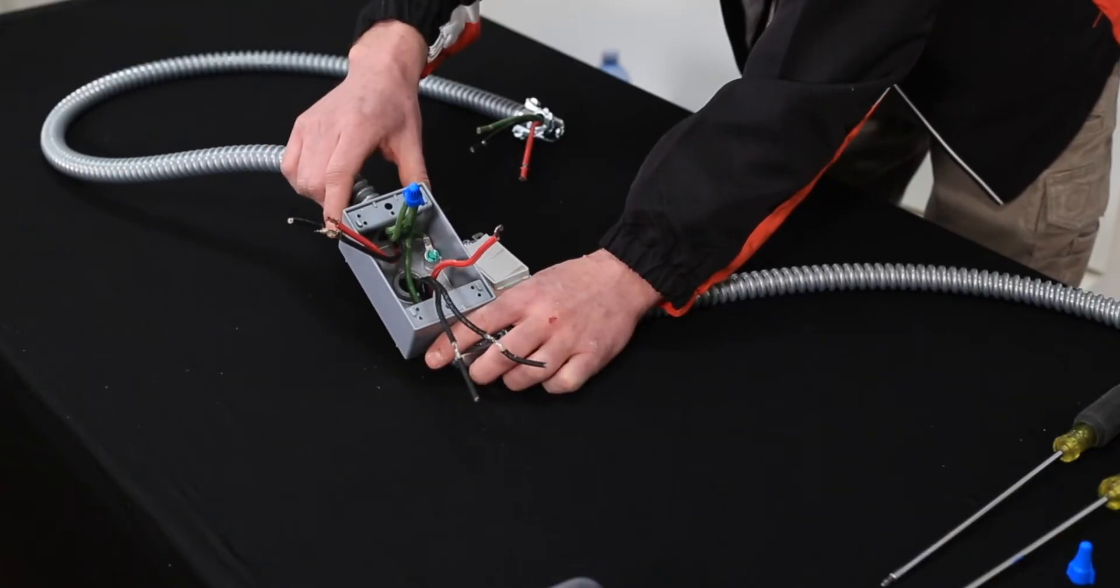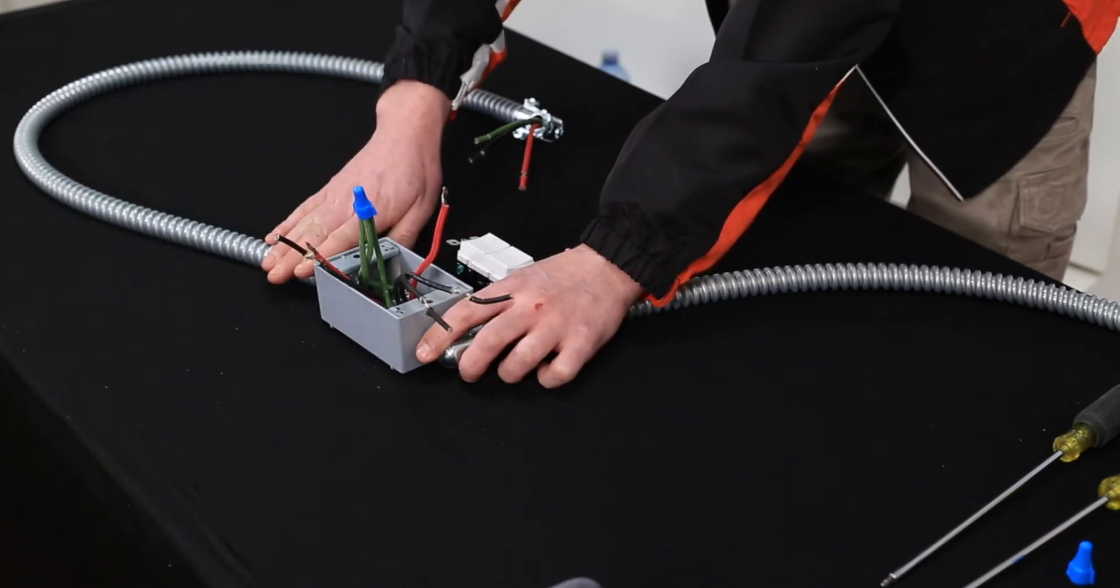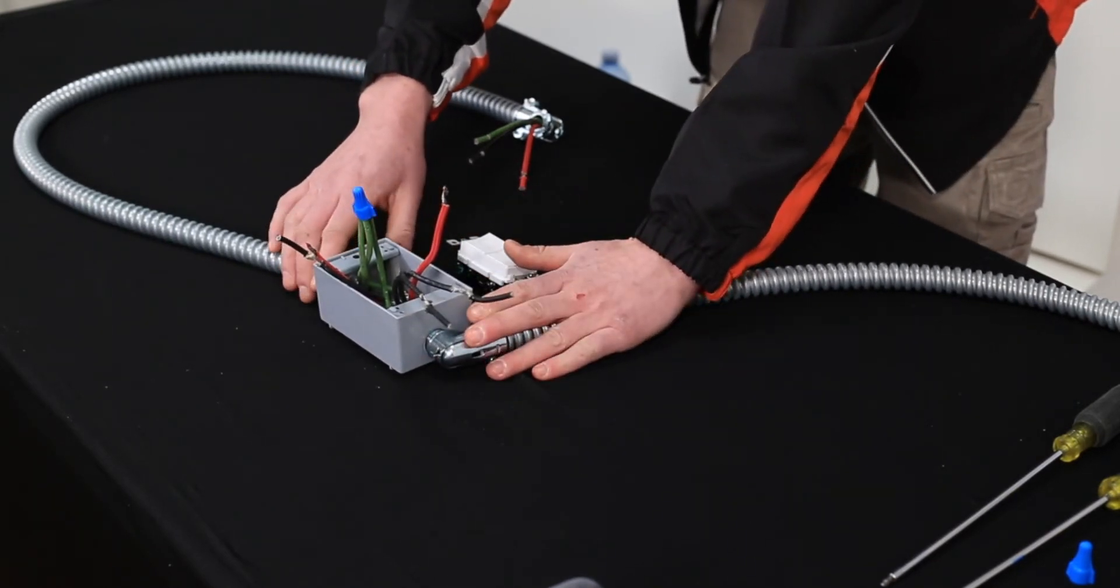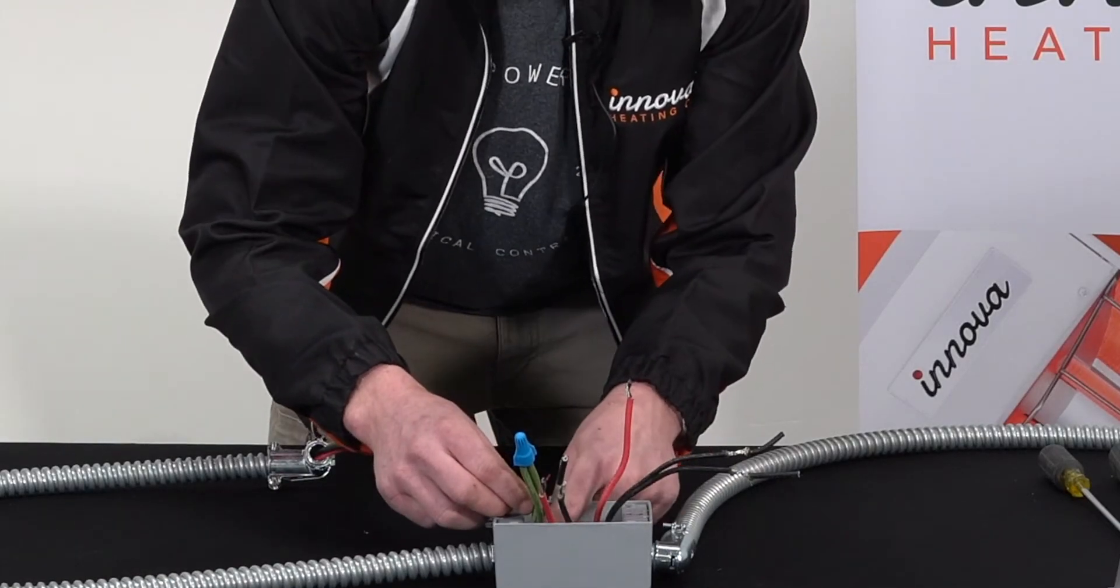This box here I already have pre-wired with the line side and load side coming from your power source. What I did already was connect the ground wire to the ground screw inside the box and connected all the wires together.